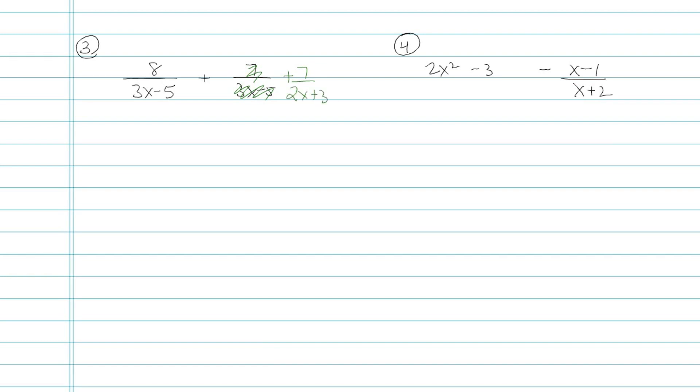Now we have binomials in the bottom, and both the binomials are different. So I want to think about what's the least common multiple. And in problem number 3, I can't do anything tricky except for to multiply each fraction by the other one's denominator. So here I'd be multiplying by 2x plus 3 over 2x plus 3, and I'll distribute that in a second. This one would be multiplied by 3x minus 5 over 3x minus 5.